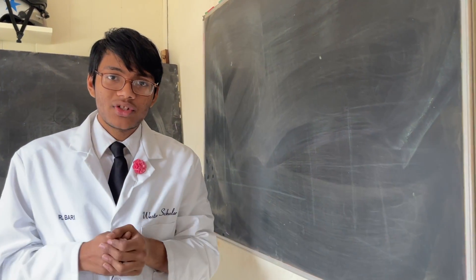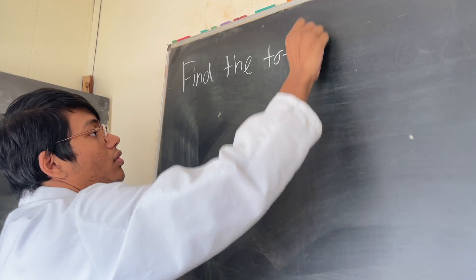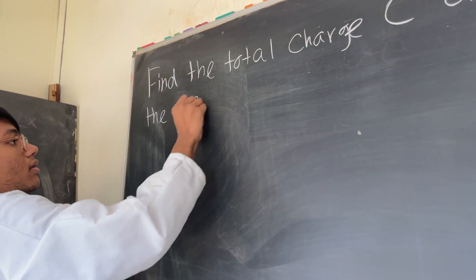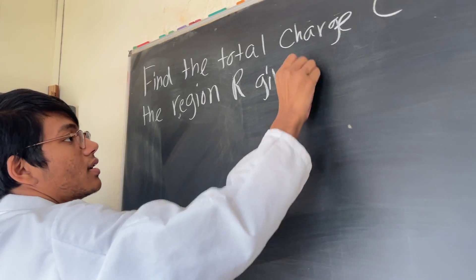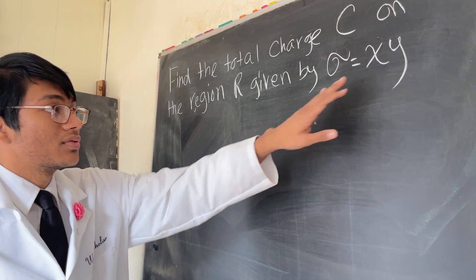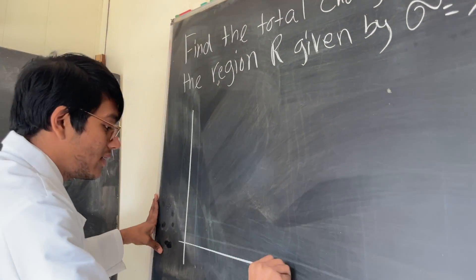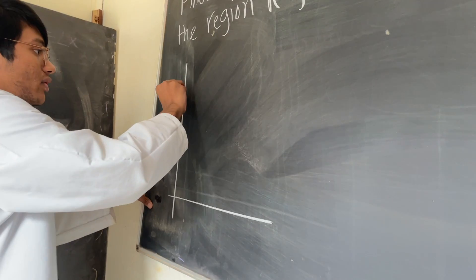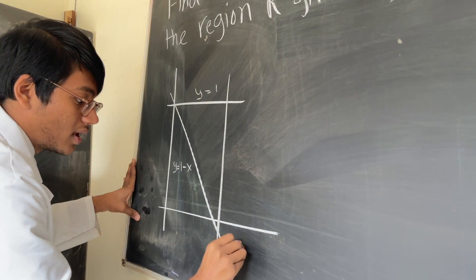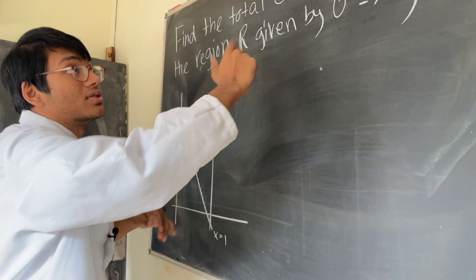Today we're going to check out an application of double integrals. Here's the problem: find the total charge C on the region R given by the following density function. Your density is equal to x times y — so the higher your x and y coordinates, the greater your density and thus your charge. The region is a triangular region bounded by y equals 1 minus x, y equals 1, and x equals 1.